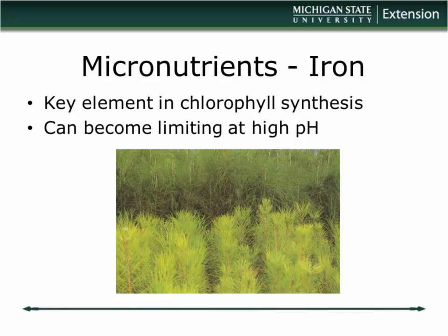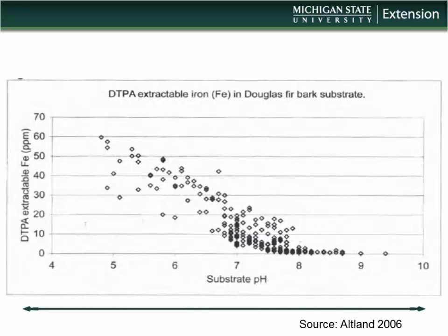So without iron you still end up with chlorosis. The classic example of iron deficiency in landscapes and nurseries is pin oak — it's what we call an iron-inefficient plant. The underlying problem is typically pH. I used to live in Oklahoma with red soil loaded with iron, yet if you try to grow pin oak there it'll be as yellow as a legal pad because of the soil pH. The iron is there; it's just not available.